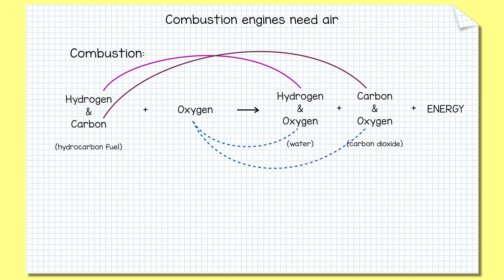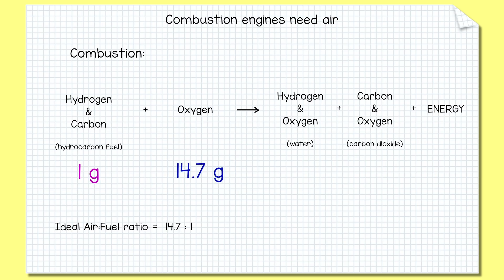You need the oxygen being fed in with the fuel in order to feed this reaction, otherwise nothing useful will happen. There's an ideal ratio for mixing oxygen with petrol and that's about 14.7 to 1. So every 1 gram of petrol fed into the combustion chamber, you need 14.7-ish grams of oxygen, or thereabouts.